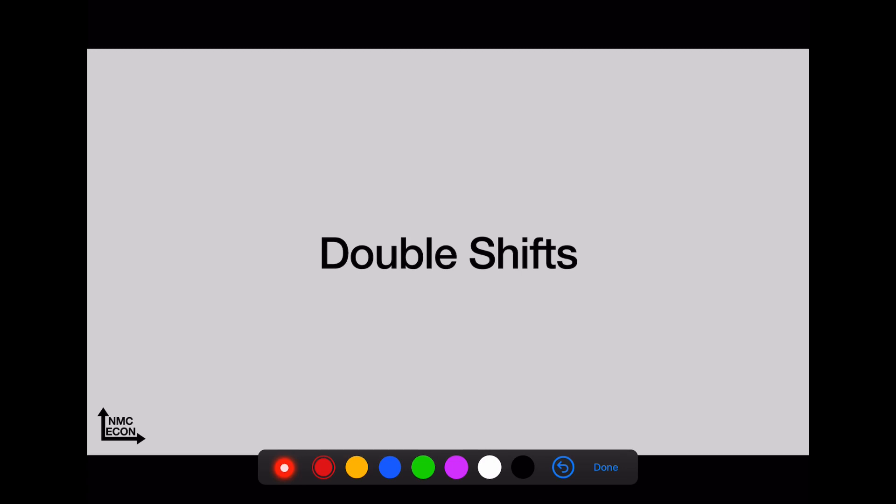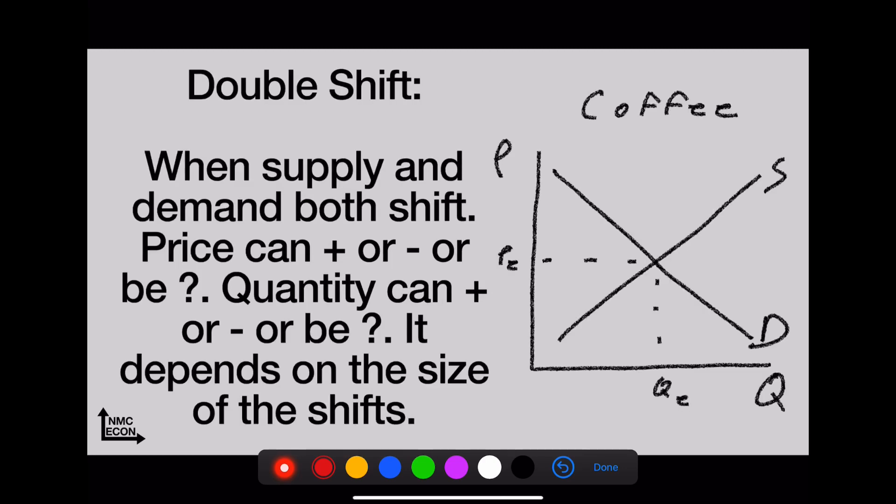Double shifts—one of the trickiest things in the whole unit. I'll show you a quick example. This is when supply and demand both shift at the same time. Price can either increase or decrease or be indeterminate—that's what the question mark means. Quantity could increase or decrease or be indeterminate. It depends on the size of the shifts.